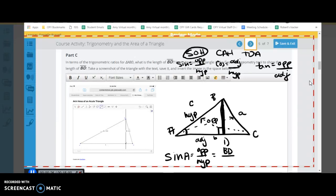If we're setting up a sine problem, we're going to do the sine of A is equal to opposite over hypotenuse, so the opposite is BD and the hypotenuse is little c. So now, sine of A is equal to BD over little c.